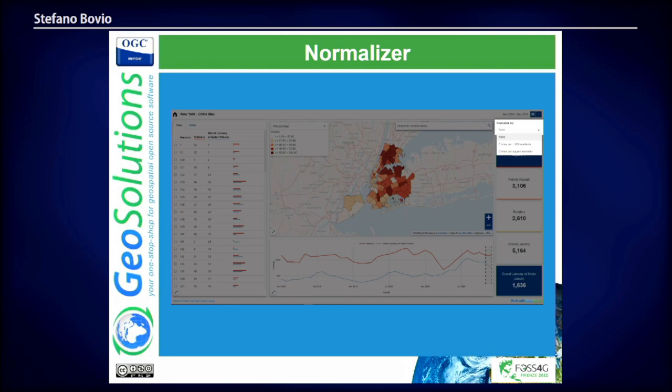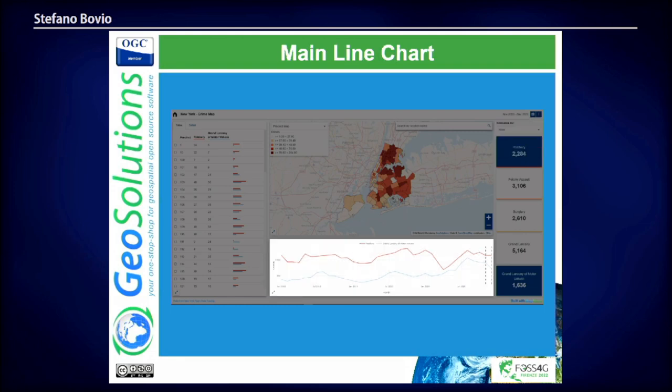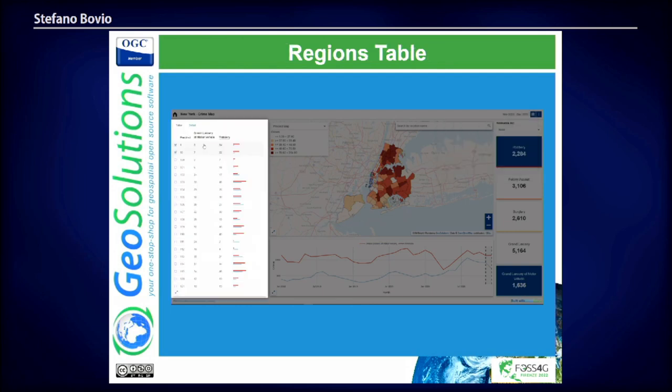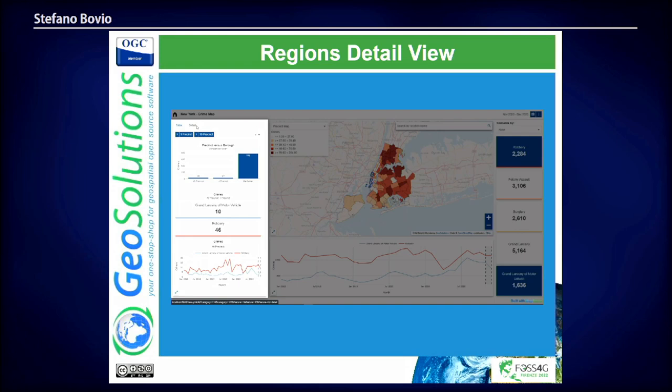At the top, we have a normalizer plugin where you can toggle between the actual count and different data views. We have a chart showing months vs. crime. There is also a filter to select the timeline range, which synchronizes across the entire dashboard. Finally, there is a table where all regions (in this case precincts) are listed — you can select each region to get a detailed highlight and compare the total count to a single precinct.